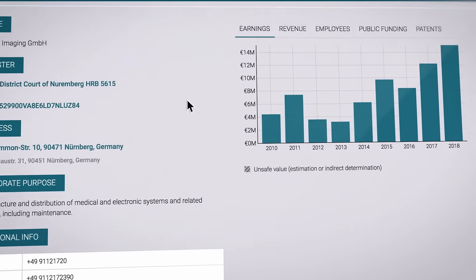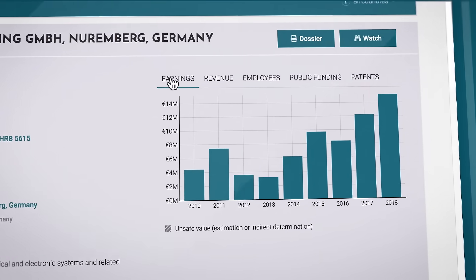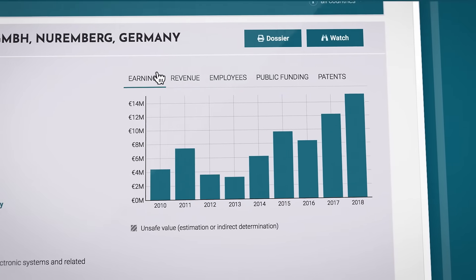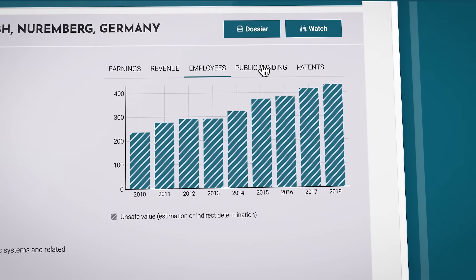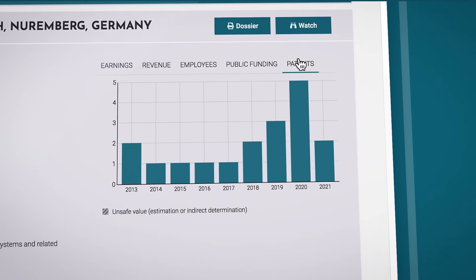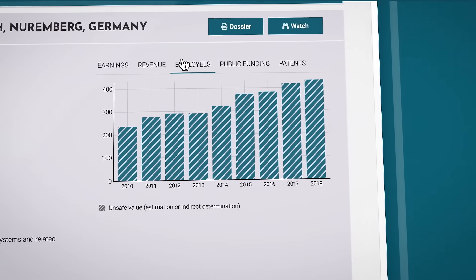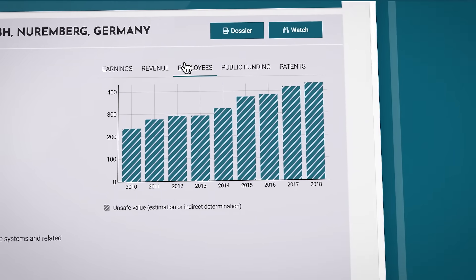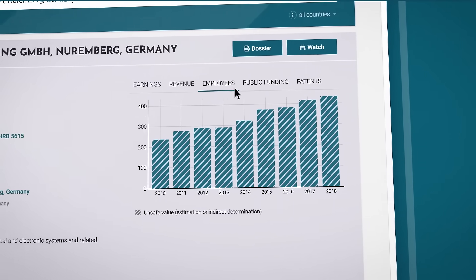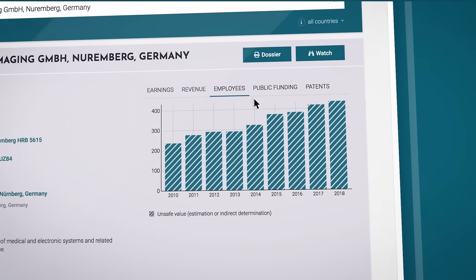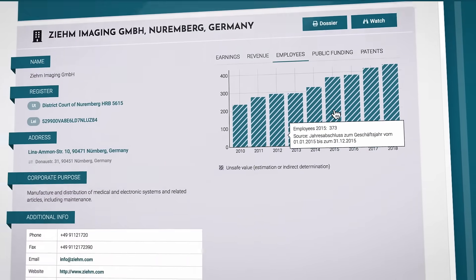Right next to the base data, you will find a chart that shows performance indicators of the past years, such as earnings, revenue, number of employees, public funding, and patents. As the number of employees is generally based on a textual analysis of the company annual reports, these may not be 100% accurate. That's why this number is shaded on the graph. You can simply click on the source link to check the figures.